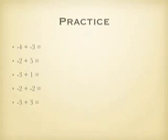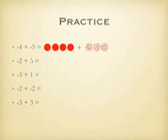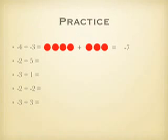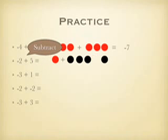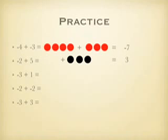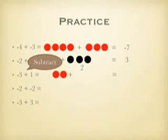So 4 plus negative 3. Now negative 2 plus 5 — that's negative 2 plus positive 5. In this case I'm going to subtract because some of the positives and negatives are going to cancel, so I'm going to be left with 3 positives. And then negative 3 plus positive 1 — again I'm going to subtract since I have to take away some pairs, so I'm going to be left with negative 2.